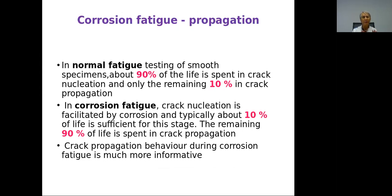In normal fatigue, testing smooth specimens, about 90% of the life is spent in crack nucleation and only the remaining 10% in crack propagation. In corrosion fatigue, however, crack nucleation is facilitated by corrosion, so there is a very short time for nucleation and the remaining 90% is spent in crack propagation. Therefore, crack propagation behavior is much more important in corrosion fatigue than in purely mechanical fatigue.